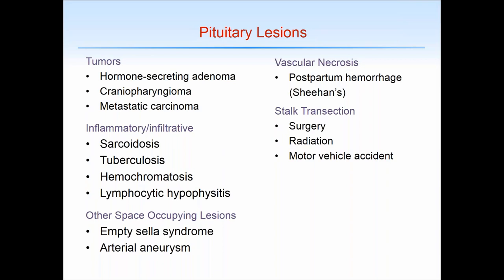While we primarily talk about Sheehan's as pan-hypopituitarism in which all cell types are impacted, in fact you can have a wide range of damage such that only certain cell types are affected. Stalk transection can also occur due to surgery, radiation, or classically the rapid deceleration of a car accident in which sudden tension on the stalk will transect it — preventing hypothalamic hormones from reaching the pituitary via the portal system and potentially transecting the axonal connections transmitting posterior pituitary hormones.